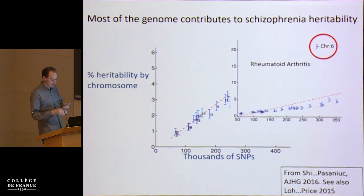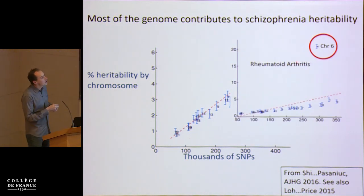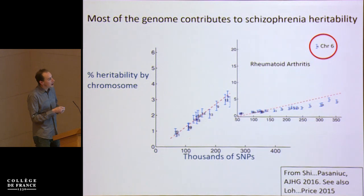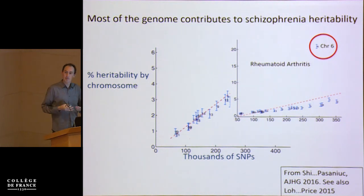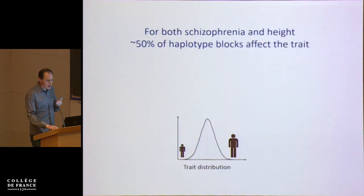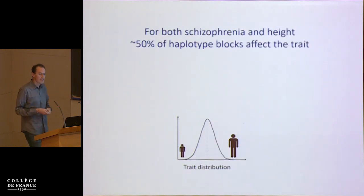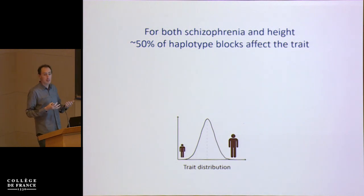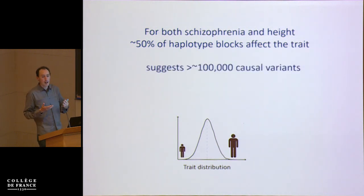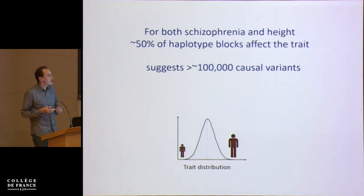Contrasting this to rheumatoid arthritis, the MHC region contributes about 20% of the heritability, but again on a polygenic background. If you ignore chromosome 6, there's a clear relationship between chromosome size and how much each chromosome is contributing. In work we've done, we've estimated for both schizophrenia and height that perhaps as many as 50% of haplotype blocks across the genome affect the trait, suggesting on the order of around 10^5 causal variants across the genome affecting each of these traits.